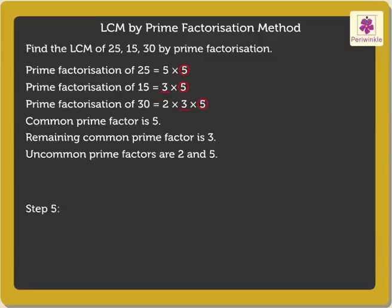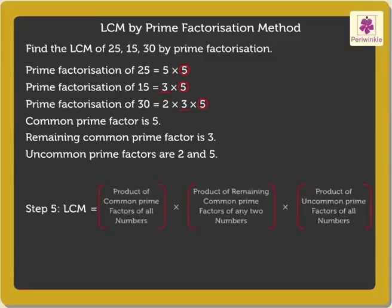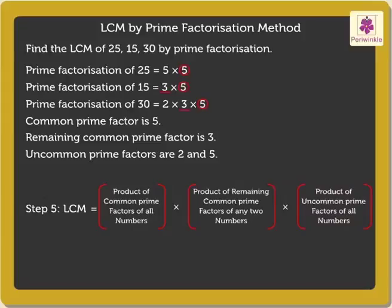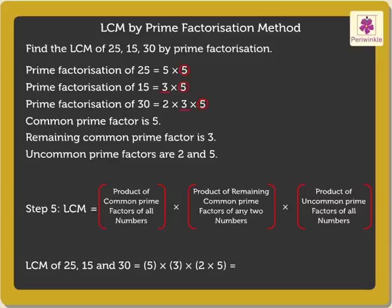Step 5: The LCM is the product of the common prime factors of all the numbers, the remaining common prime factors of any two numbers, and the uncommon prime factors of all the numbers. Thus, LCM of 25, 15, and 30 is equal to 5 × 3 × 2 × 5, which equals 150.